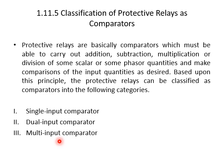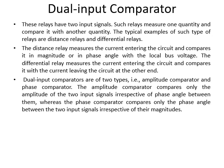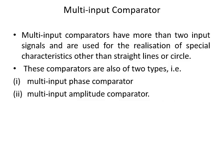In case of a multi-input comparator, there are more than two input signals, as the name indicates. They are used for the realization of special characteristics other than straight lines or circles. There are two types: multi-input phase comparator and multi-input amplitude comparator.